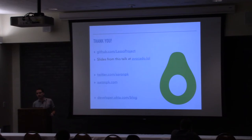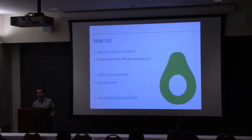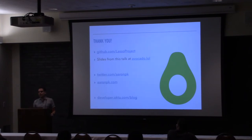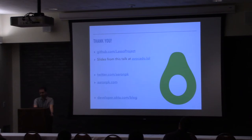Q: Does Lasso allow multiple authenticators — for example, configuring both Google and GitHub so users can make their own choice? A: No, it only supports one at a time. The use case of letting users choose between Google or Facebook is a common pattern for public-facing pages, but Lasso wasn't designed for that — it's definitely meant for protecting internal tools, not general user authentication. But that's a cool idea; I could see extending it for that.